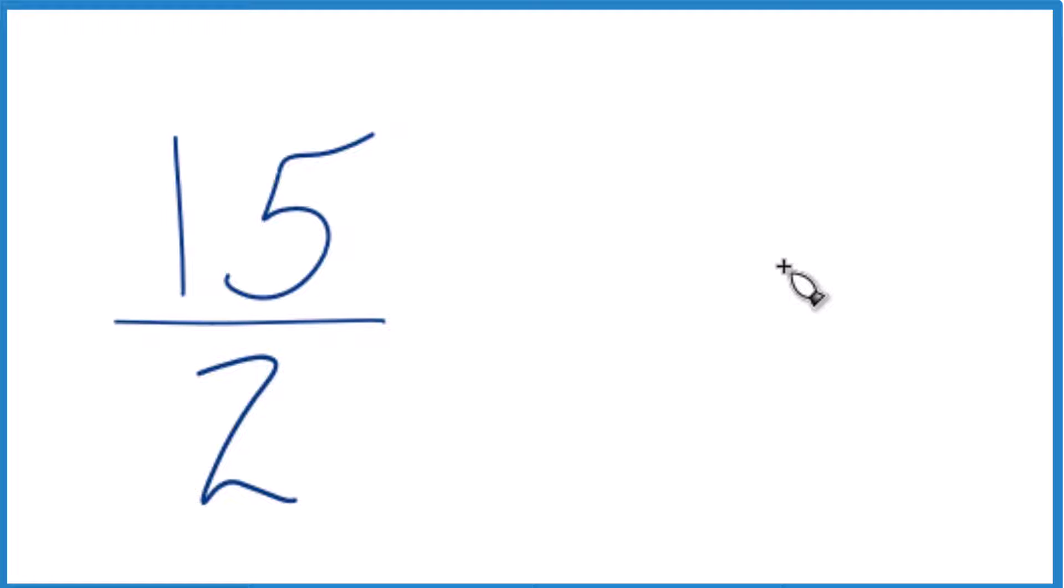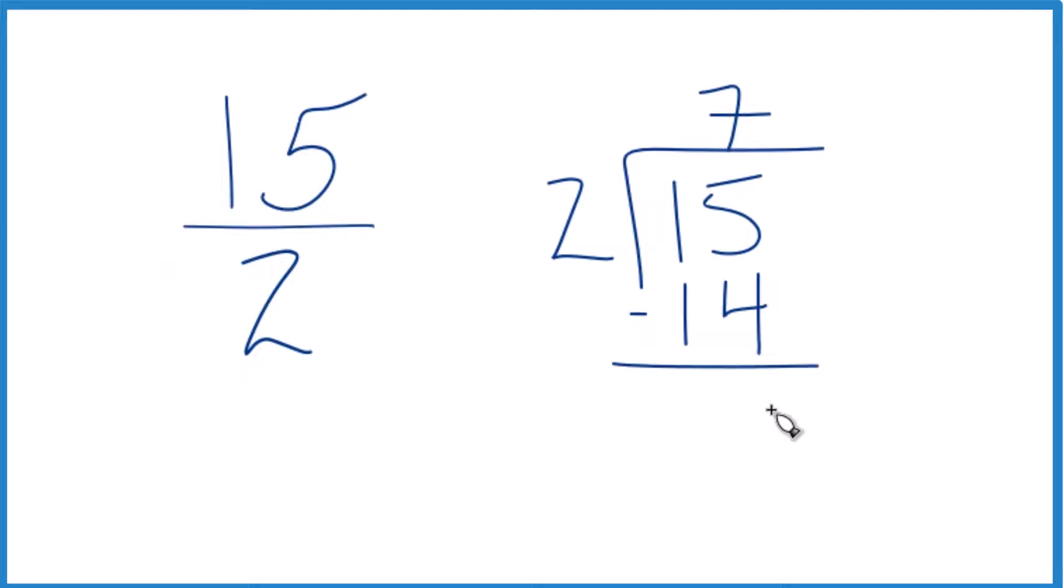Probably the best thing to do is to take 15 and we want to see how many times does 2 go into 15. So we're just going to do long division here. We said 2 times 7, that's 14. So that's pretty close. Subtract and we have 1.